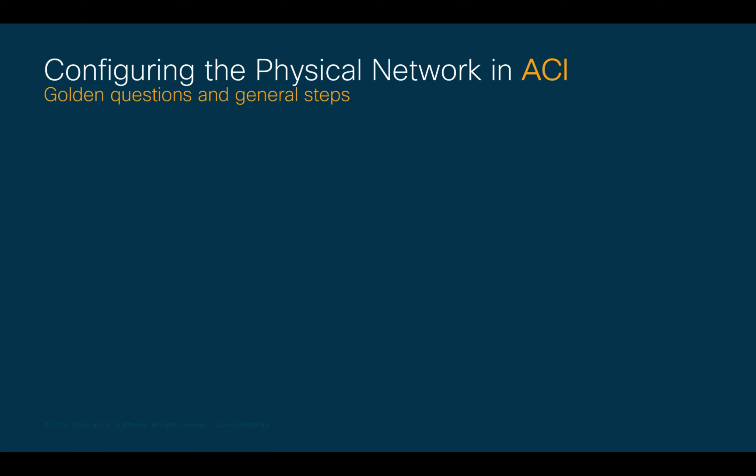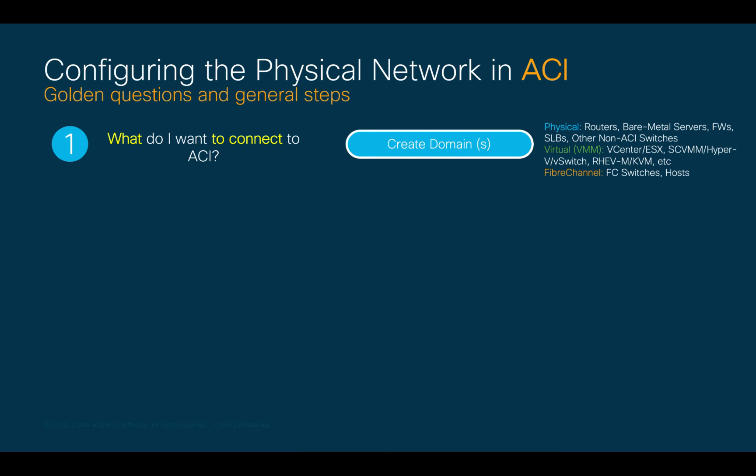Every time I want to connect something to an ACI fabric, I always ask myself five basic questions that most of the time will help me getting the physical network configuration done. The first question is, what do I want to connect to ACI? And the answer may vary. You may want to connect physical devices like switches, bare metal servers and routers, or virtual servers like VMware with vCenter and virtual switches, or even fiber channel connections to fiber channel switches. These types of connections are called domains, and it is the first thing we will define.